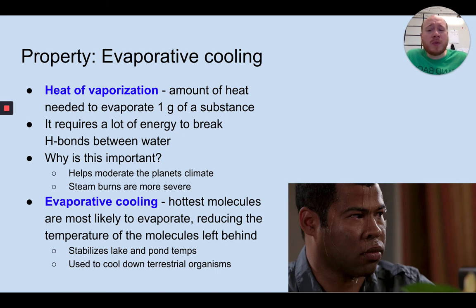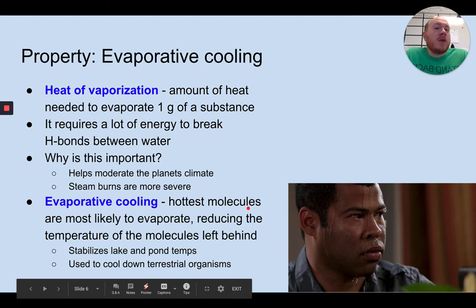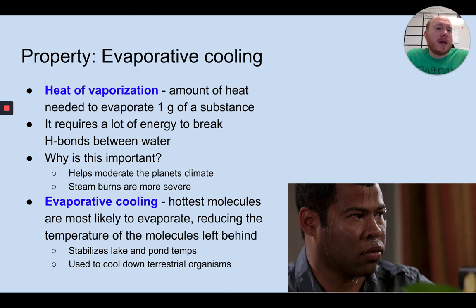It's also used to cool down terrestrial organisms. Sweat is an example of evaporative cooling. When you're outside and it's really hot, your body sweats so that as the sweat evaporates, it pulls heat with it and it reduces the temperature of the molecules around it. Not all organisms sweat. If you think about dogs pant, so dogs are panting to help evaporate and cool off their body. This is an example of evaporative cooling. It's incredibly important, especially for terrestrial organisms, because overheating can be a huge issue.